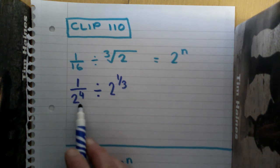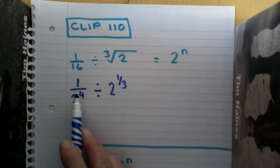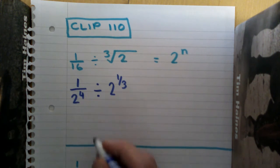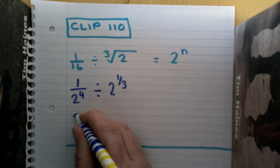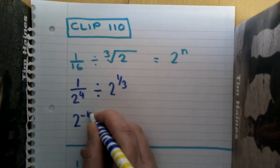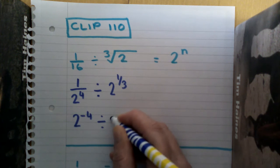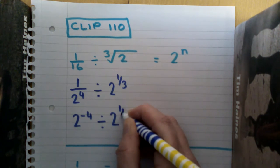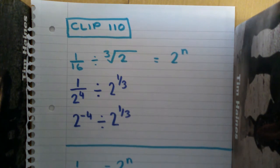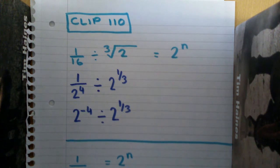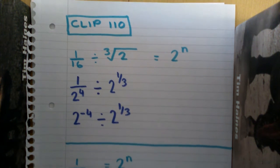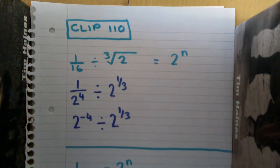Now remember, our 2 is in the denominator of the fraction, so that means we have negative power. We can change this to 2 to the power minus 4 divided by 2 to the one third. Remember, when we divide indices, it means we take away the indices.